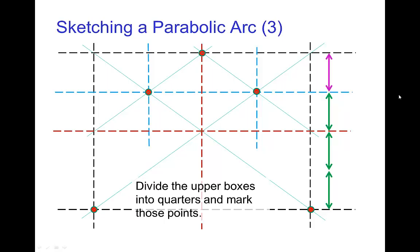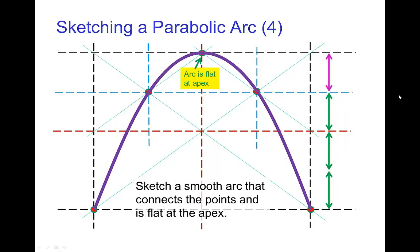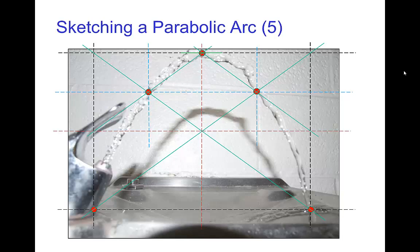Now we're basically done because all we have to do is sketch a smooth curve that connects those points. You want to make sure it's flat at the top. And there's your parabolic arc. And you can compare with examples of things flying through the air like this stream of water. You can even check this shadow is also a parabolic arc.